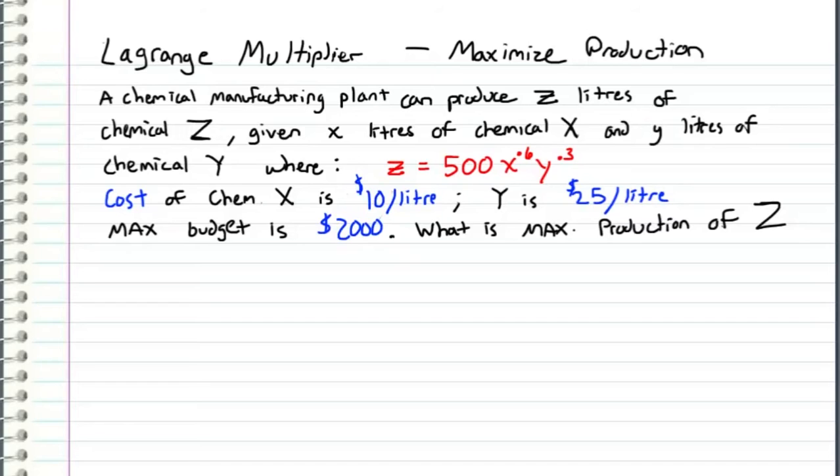Okay so here is the actual problem that was sent in and I wrote it out right here. We have a chemical manufacturing plant that can produce z liters of chemical z given x liters of chemical x and y liters of chemical y, where z is a function of x and y that equals 500x^0.6 times y^0.3.